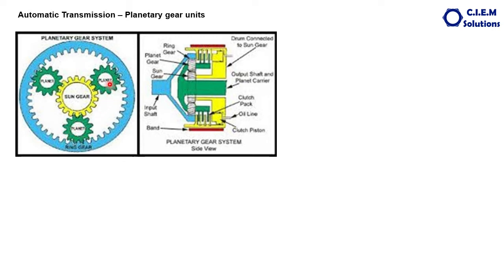All three planetary pinions are connected to a single device called the case. The outer one is called the ring gear — this is the ring gear, and it has internal teeth, whereas the other two gears have external teeth. The job of the ring gear, in addition to varying the gear ratios, is to give a particular specific path to the planetary pinions.